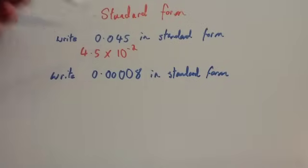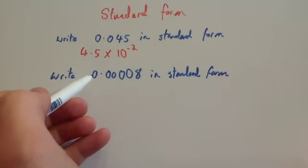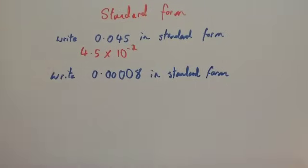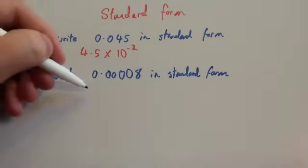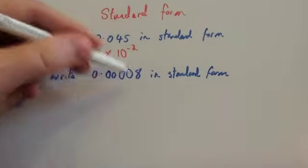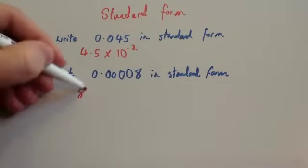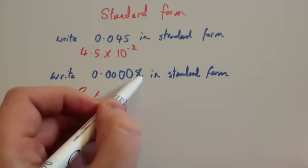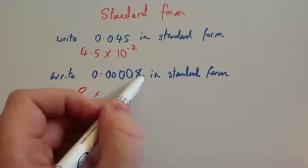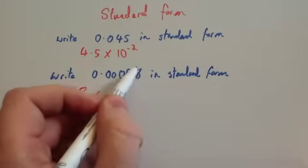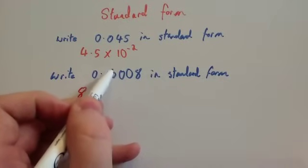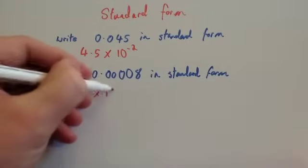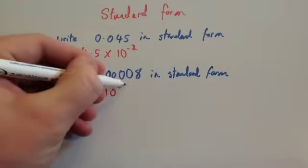Let's do 0.0008 in standard form. Again, you're going to have a number between 1 and 10, so this time it's going to be 8. Now, the decimal point would be at the end of the number 8 there. So here, we want to move it once, twice, 3, 4, 5 times to the left. So we're going to times it by 10 to the minus 5.